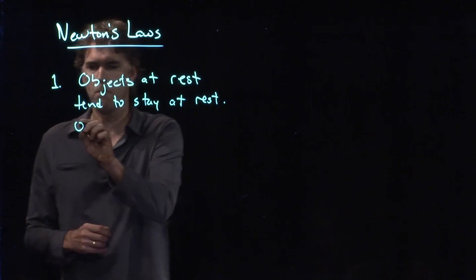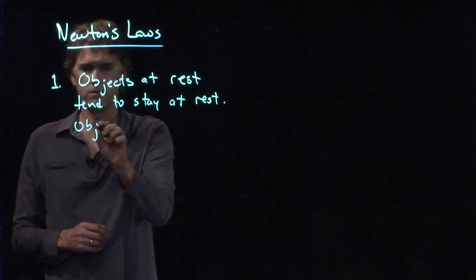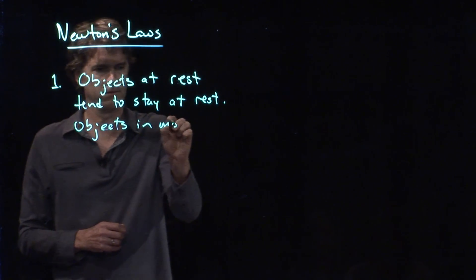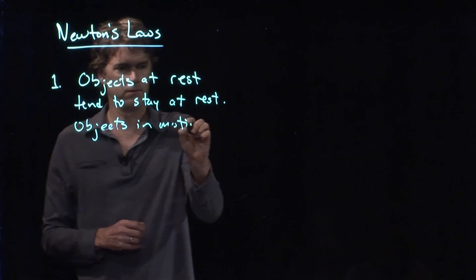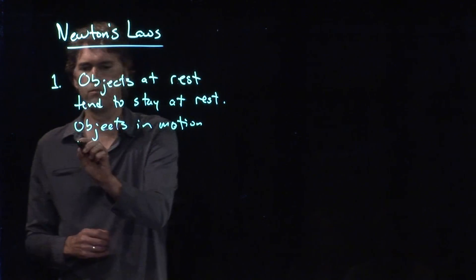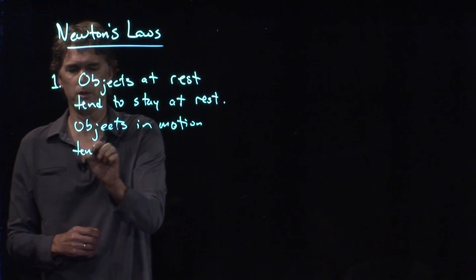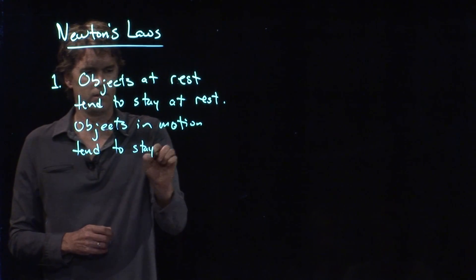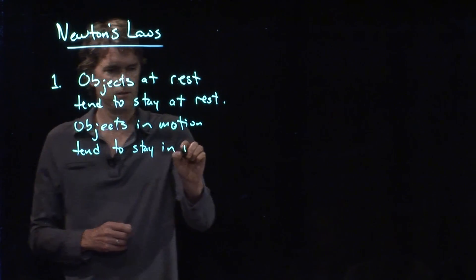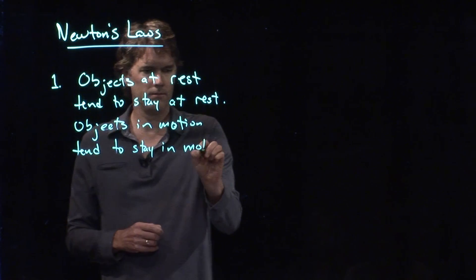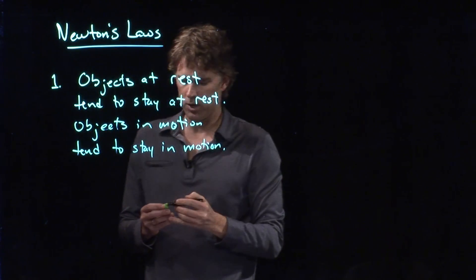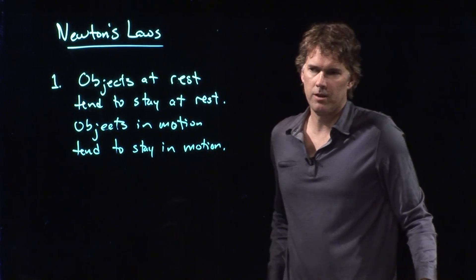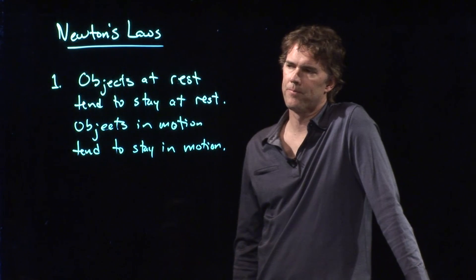He had three. And the first one is: objects at rest tend to stay at rest. Objects in motion tend to stay in motion. And this sounds rather intuitive now. But when Newton came up with these laws, they were rather counterintuitive.